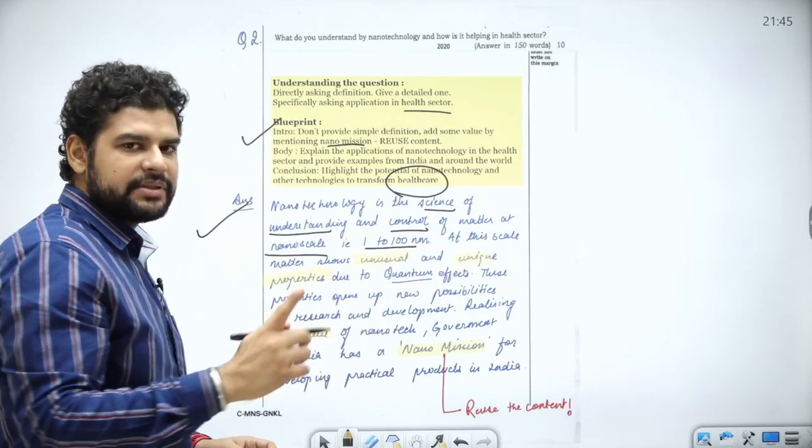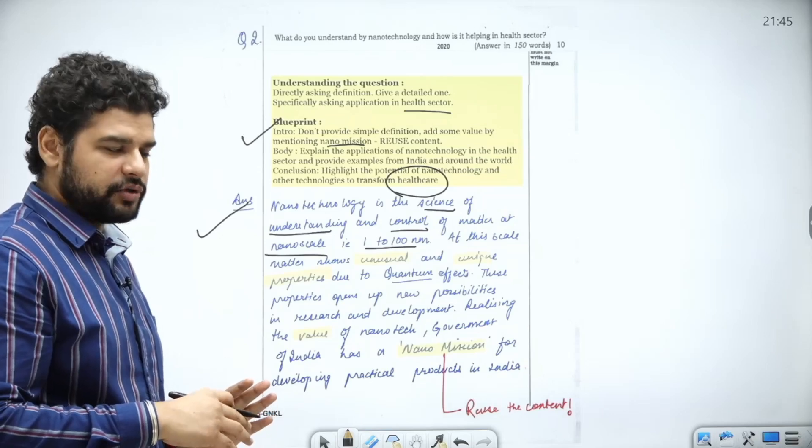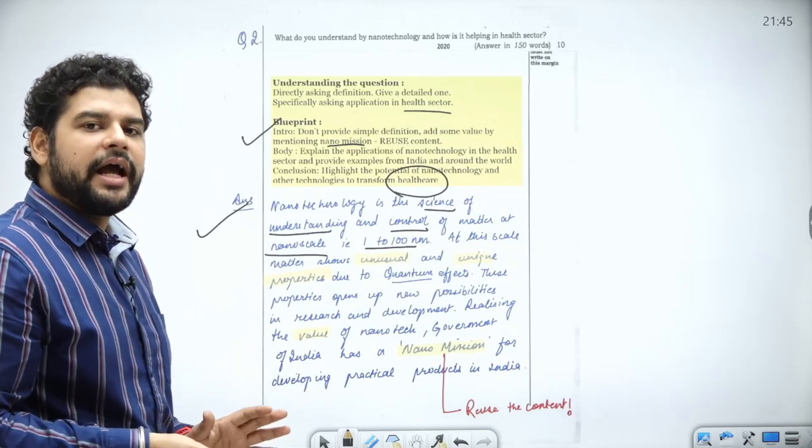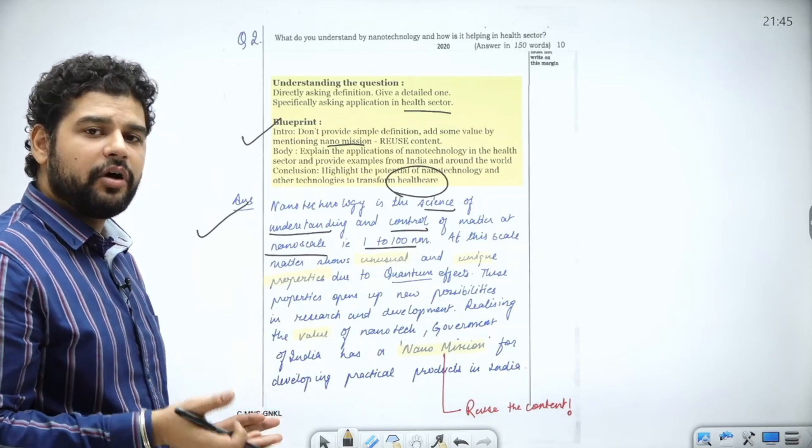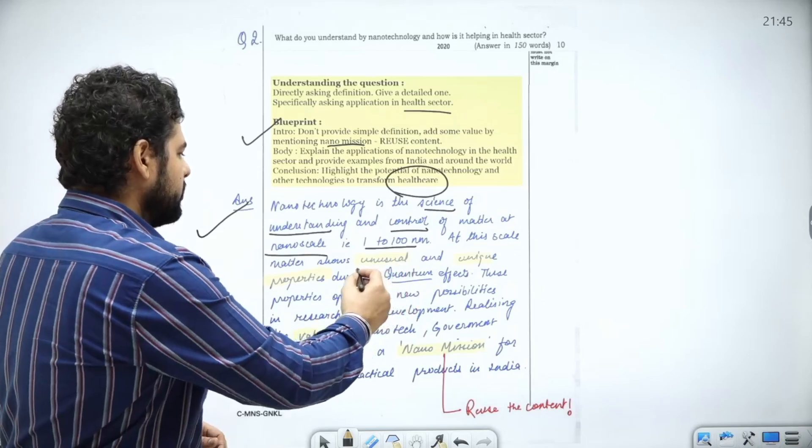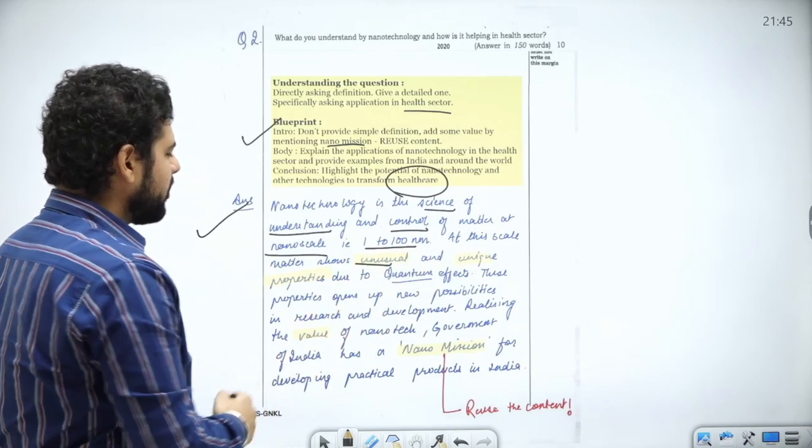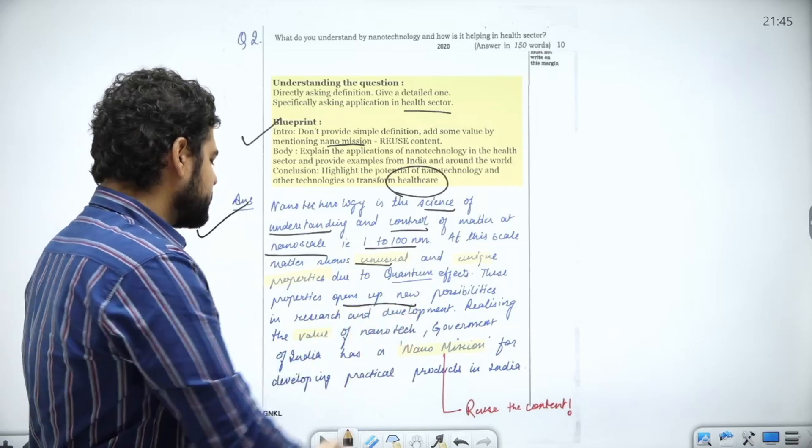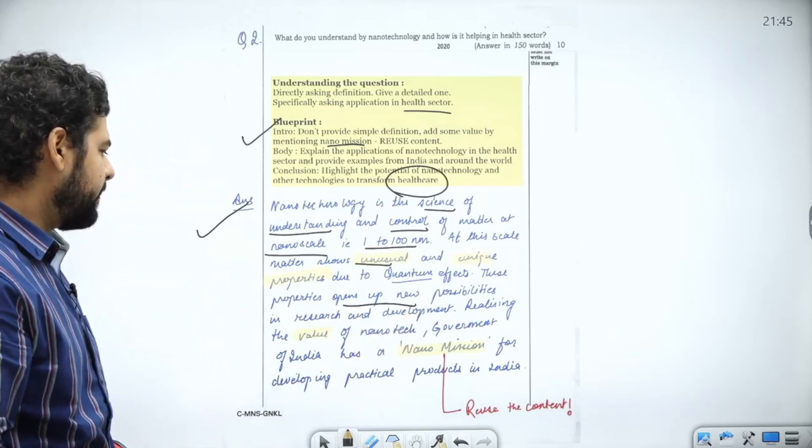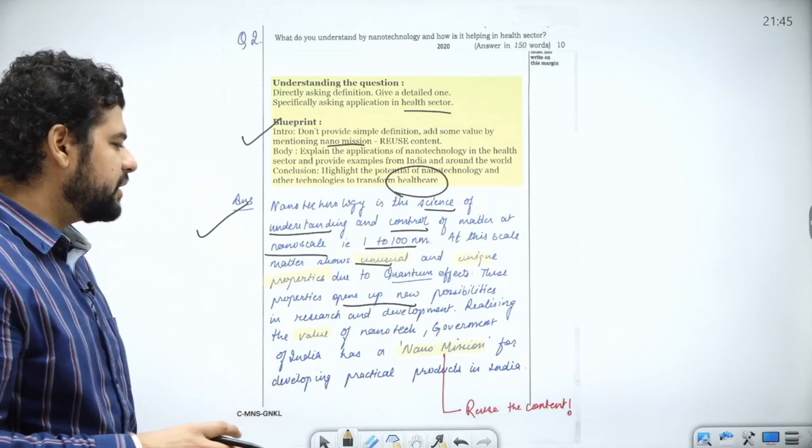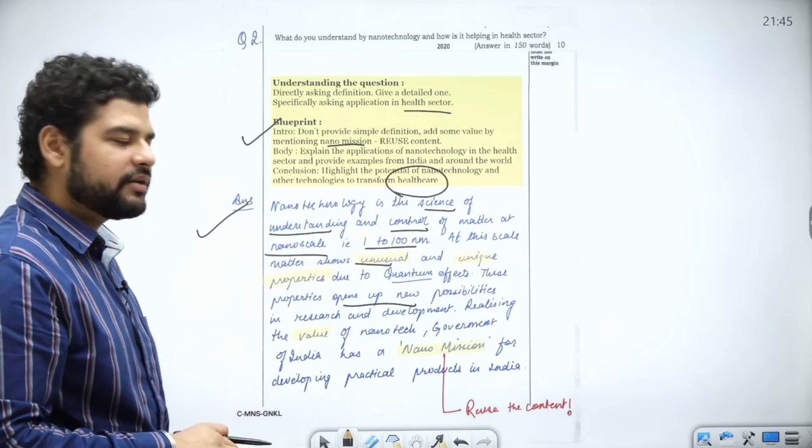At this scale, what happens? The properties of materials change, they behave in different ways. That is the benefit of technology at nano level. At this scale, matter shows unusual and unique properties due to quantum effects. These properties open up new possibilities in research and development.